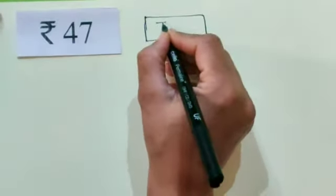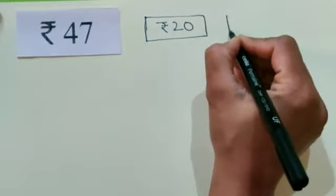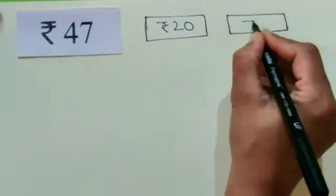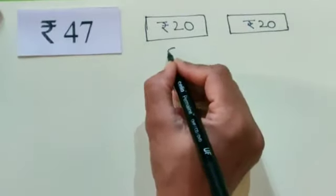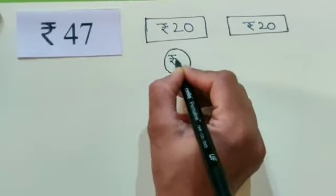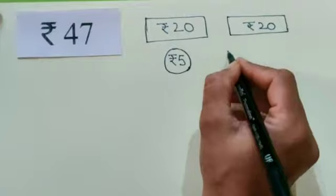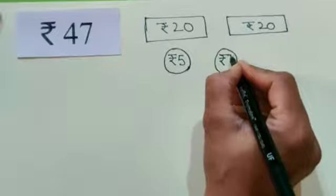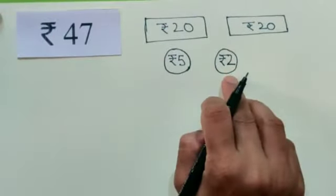Yes students, it is a Rs. 20 note. Again, we will draw one more note — yes students, it is Rs. 20. Now we will draw a coin — yes, it is Rs. 5. So 40 and 5 is 45. Now we will draw one more coin — yes, it is Rs. 2. So students, 45 and 2 is 47.